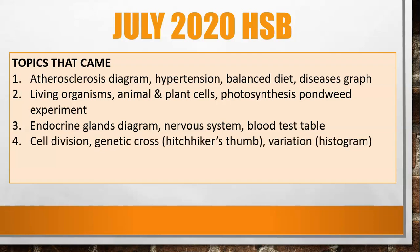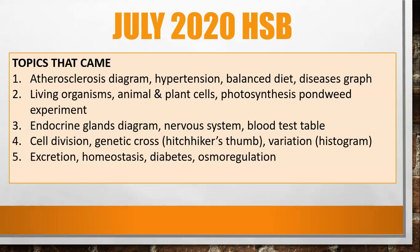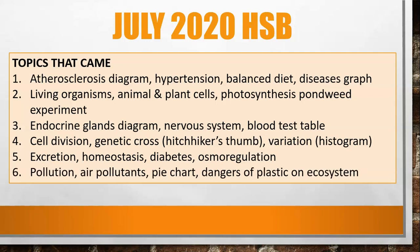There was also a table of blood tests dealing with thyroid problems. Question four was on cell division, with a genetic cross on the characteristic hitchhiker's thumb, plus a histogram on variation. Question five covered excretion, homeostasis, diabetes, and osmoregulation. The last question dealt with pollution, air pollutants, a pie chart, and the dangers of plastic on the ecosystem. That covered the July 2020 human and social biology paper.